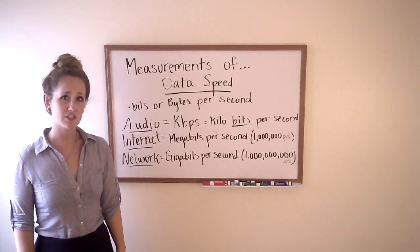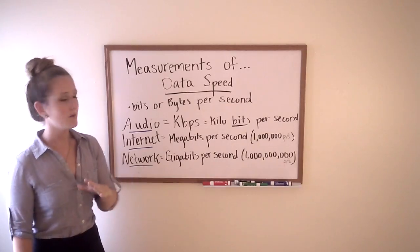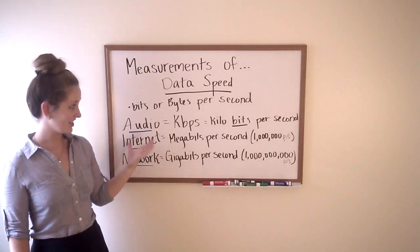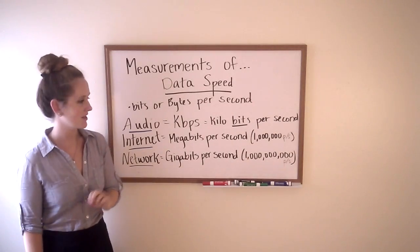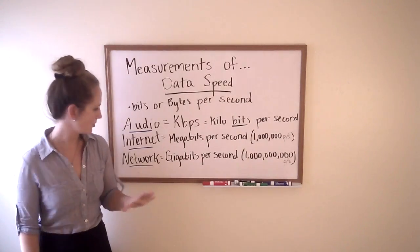How we talk about speed depends on what we're talking about. When we talk about the speed of an audio download, we talk about kilobits per second. Kilobits, not kilobytes, totally different number.